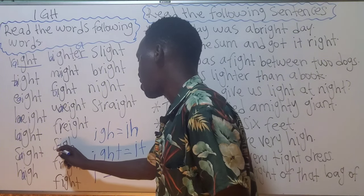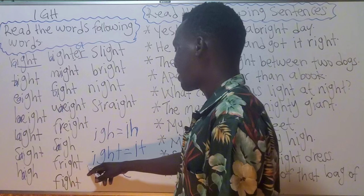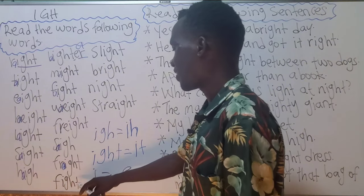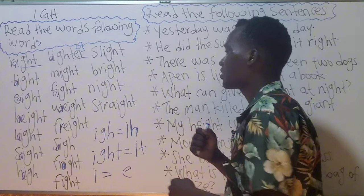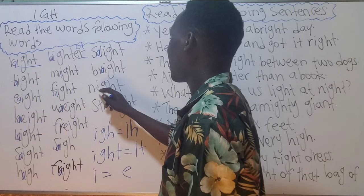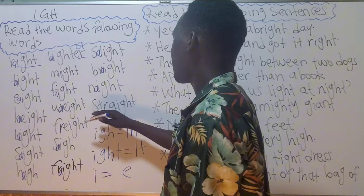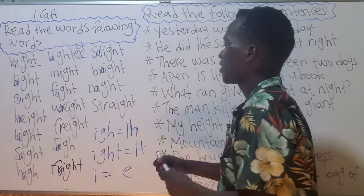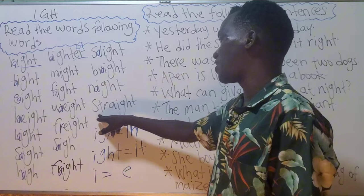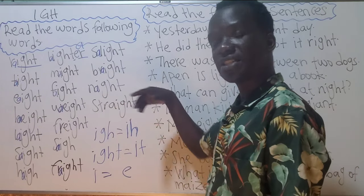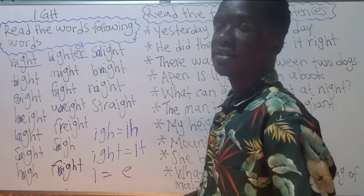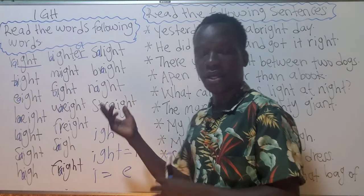'Side' — invisible A is here. 'Fright,' 'flight.' 'Fight' — to beat somebody. 'Bright' and 'night' — invisible A. 'Straight' — this one is correct, straight, and there is no invisible A because this A is clearly seen. 'Night' — late, when there is no sunshine anymore. 'Bright' — and then 'slight.'